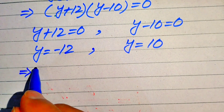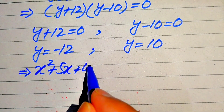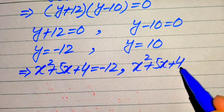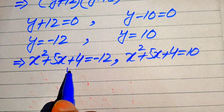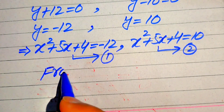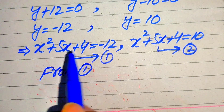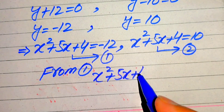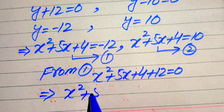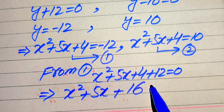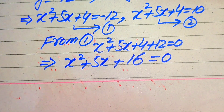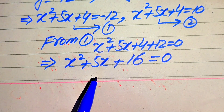Substituting y = −12 gives equation 1: x² + 5x + 4 = −12, and substituting y = 10 gives equation 2: x² + 5x + 4 = 10. Solving equation 1 first: moving −12 to the left gives x² + 5x + 4 + 12 = 0, which simplifies to x² + 5x + 16 = 0. Since this cannot be factored, we apply the quadratic formula.